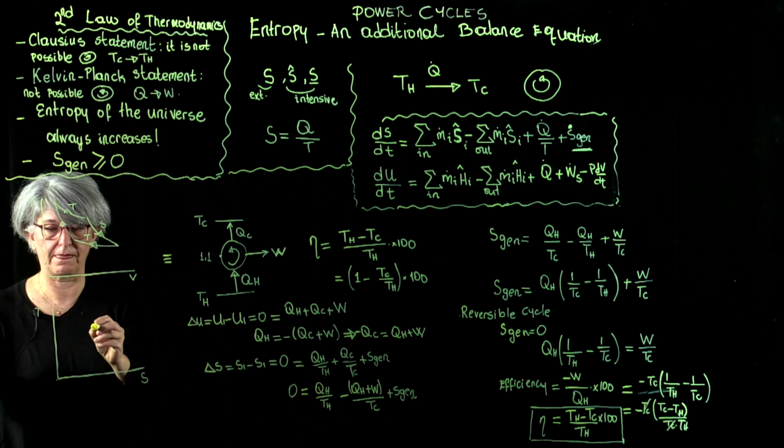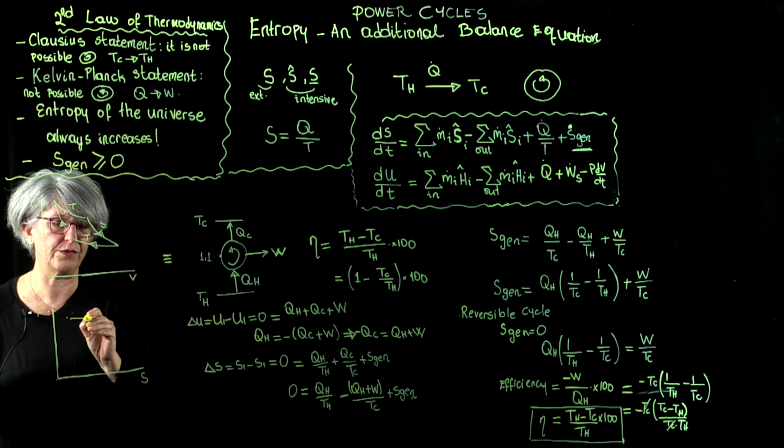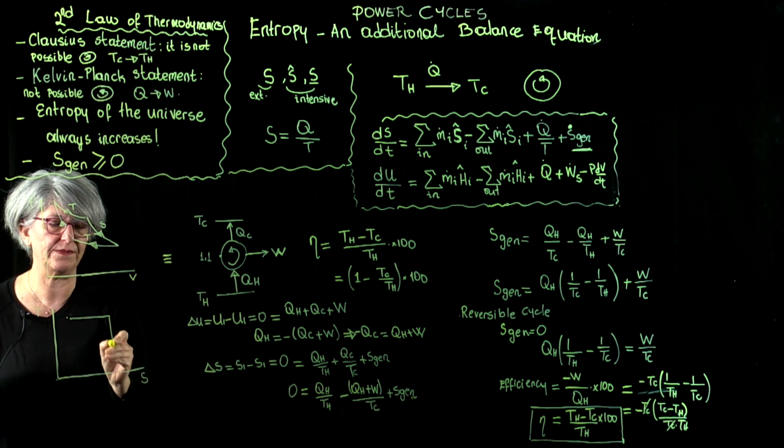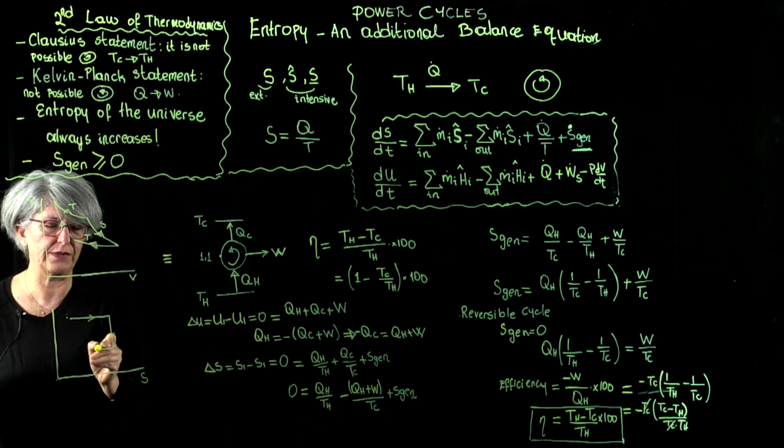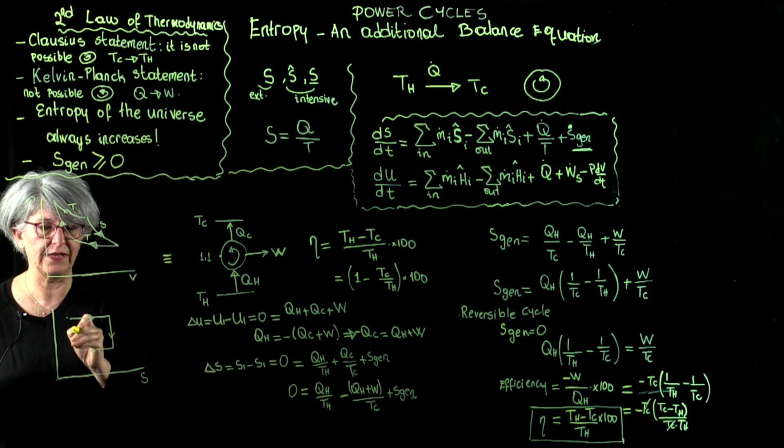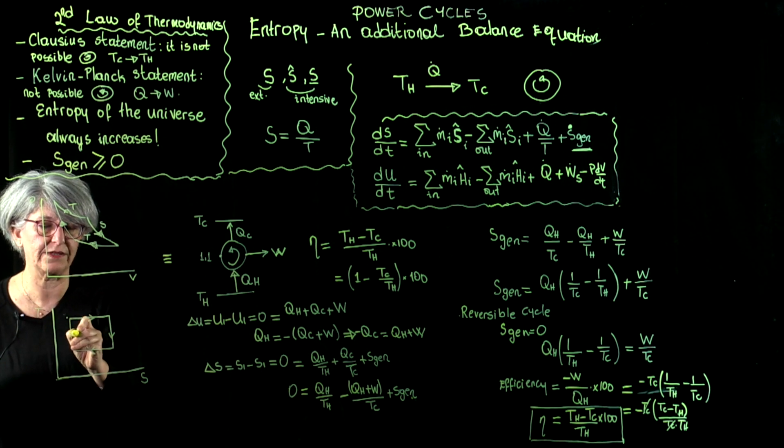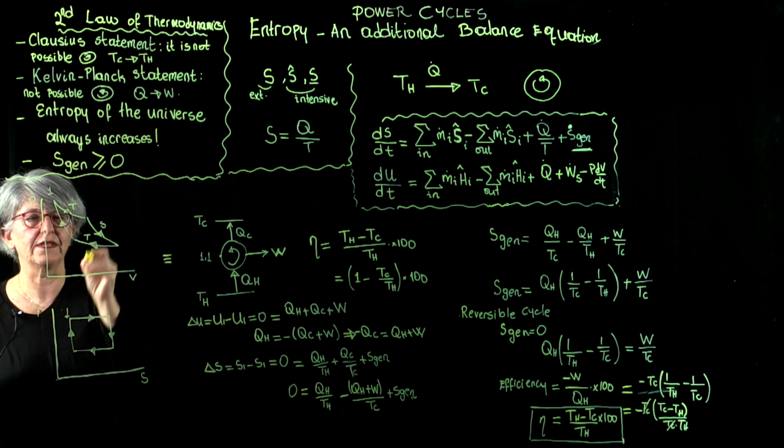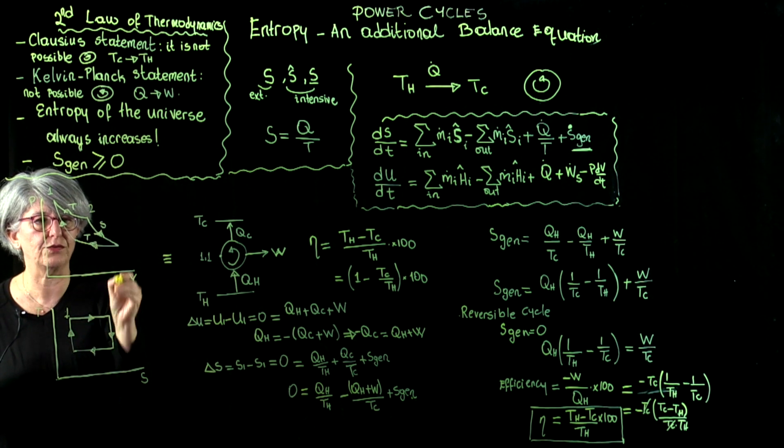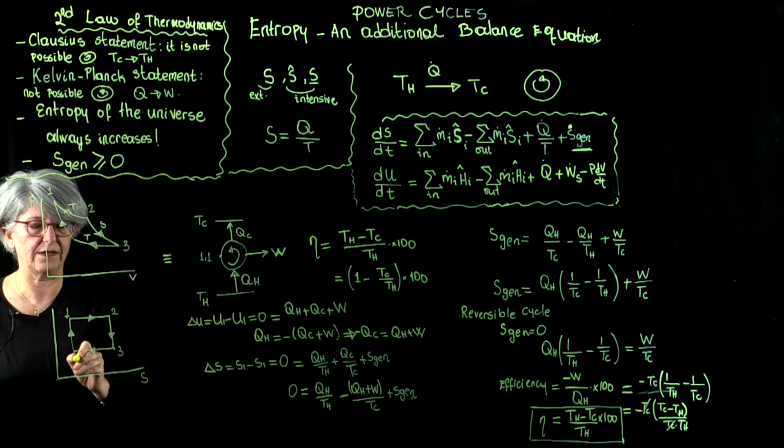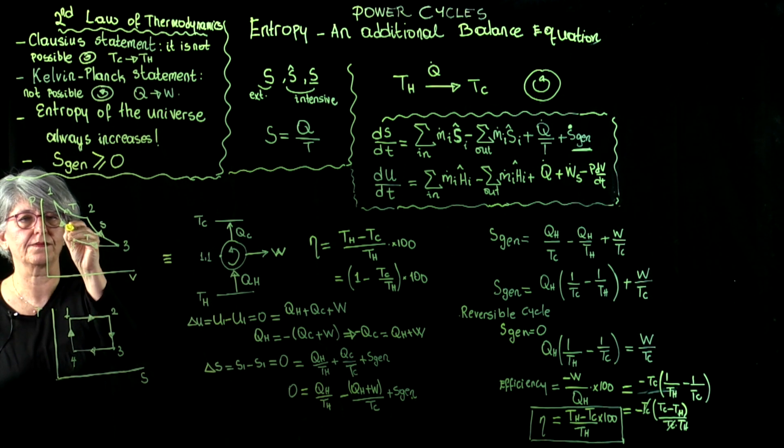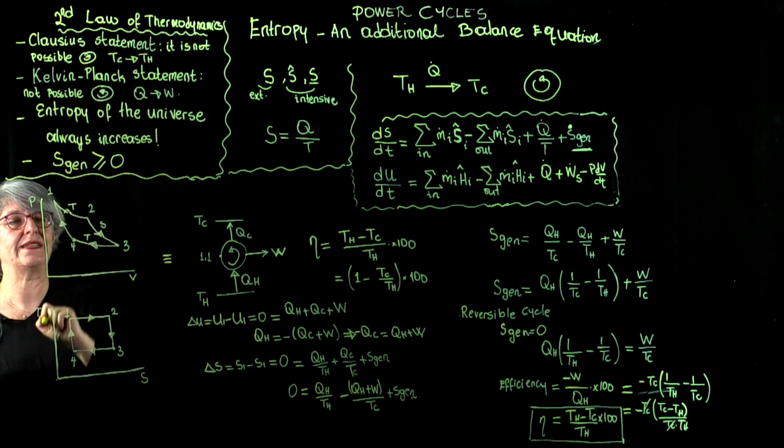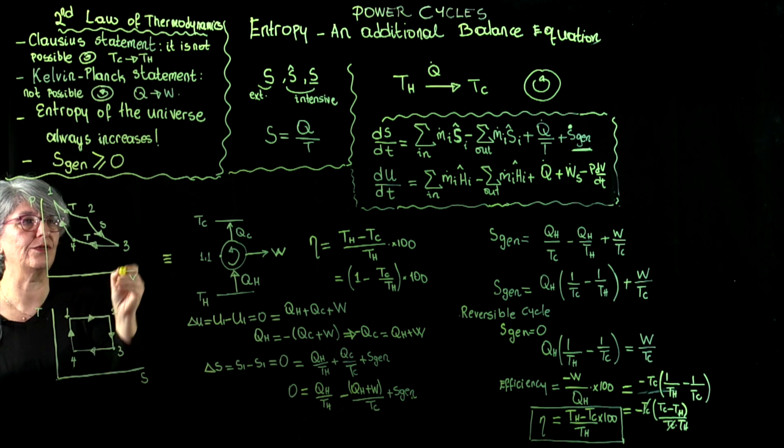I repeat: a reversible isothermal expansion, reversible adiabatic expansion, reversible isothermal compression, and reversible adiabatic compression. This is state 1, this is state 2, state 3, state 4. Those are my states, and as such represented, this cycle is called the Carnot cycle.